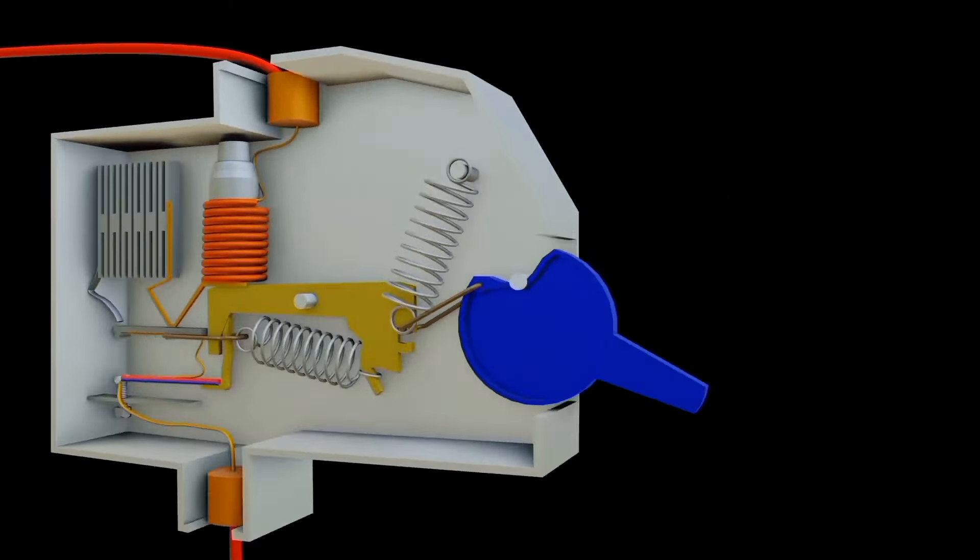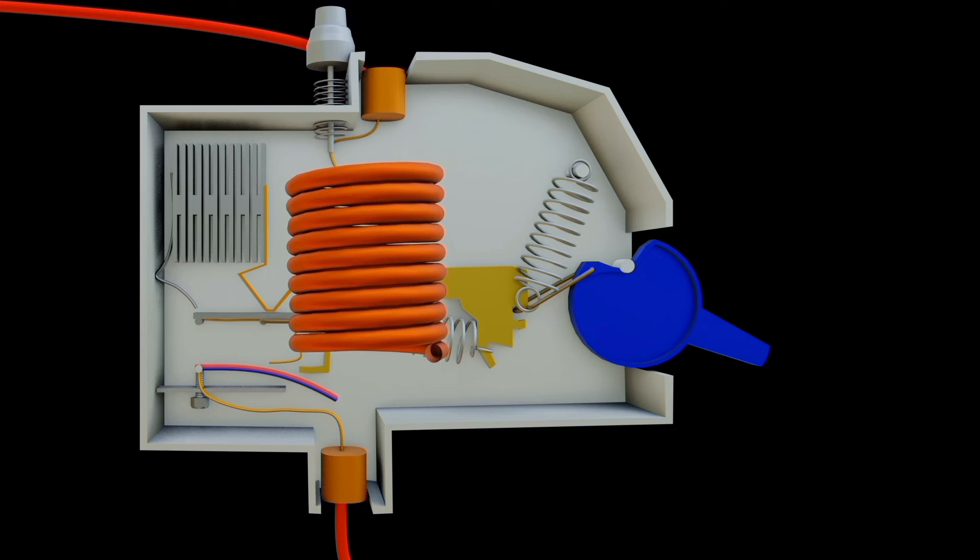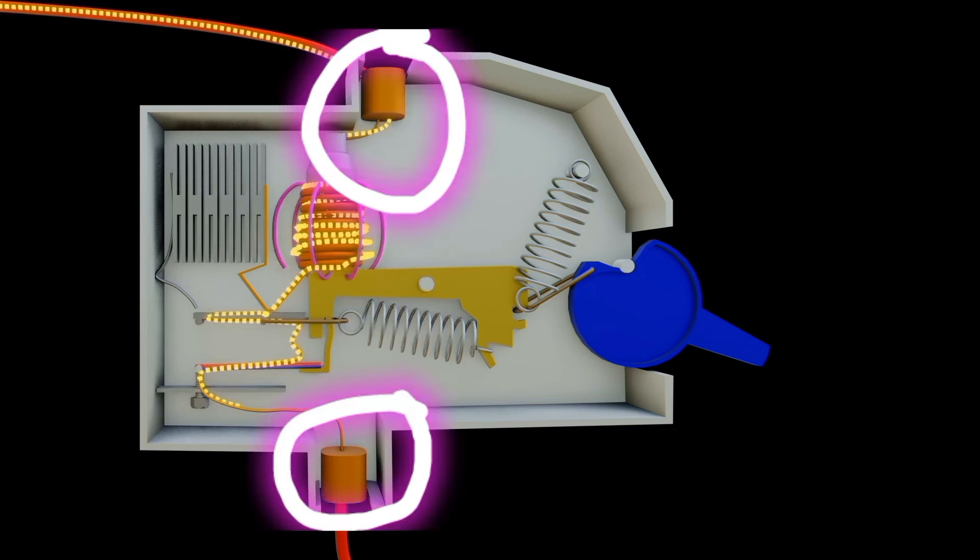Inside circuit breaker we have moving contact, fixed contact, magnetic coil and this magnetic coil has a small metal cylinder with a pin. Also a small spring is put inside it. Power terminals are connected with wires.